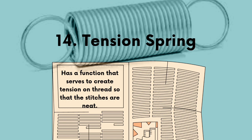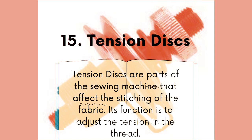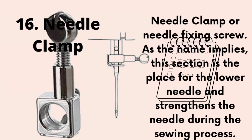Fourteenth, the tension spring, which has a function that serves to create tension on the thread so that the stitches are knit. Fifteenth, the tension desk. Tension desk is a part of the sewing machine that affects the stitching of the fabric. Its function is to adjust the tension on the thread. Sixteenth, the needle clamp, also called the needle fixing screw. This section is a place for the lower needle and strengthens the needle during the sewing process.